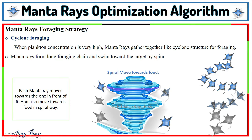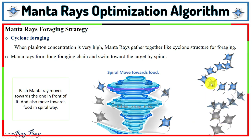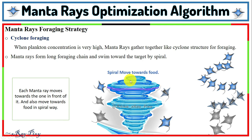The second strategy is cyclone foraging. When the concentration of plankton is very high, dozens of Manta rays gather together in a cyclone-like structure. They form a long foraging chain and swim toward the target in a spiral. Each Manta ray moves toward the one in front of it and also moves toward the food in a spiral way, which pulls the target directly into their open mouths.